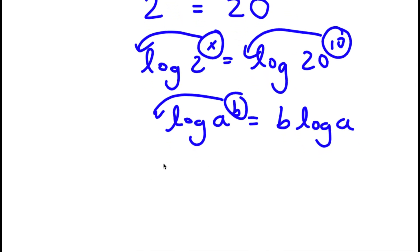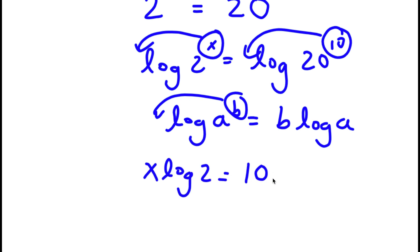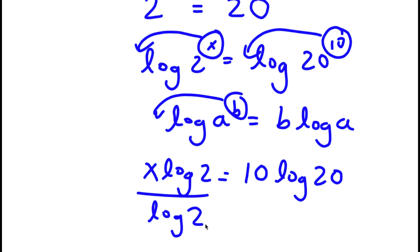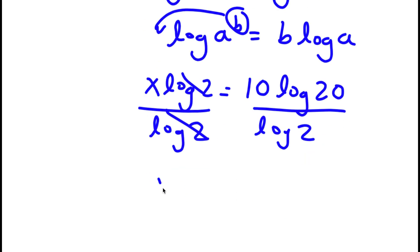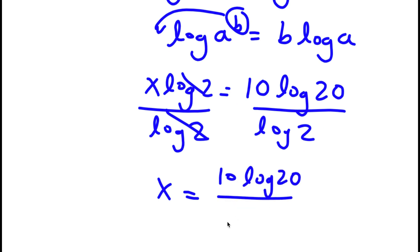So now I have x times log 2 is equal to 10 times log 20. Now if I divide both sides by log 2, these two cancel out and I'm left with x is equal to 10 times log 20 over log 2.